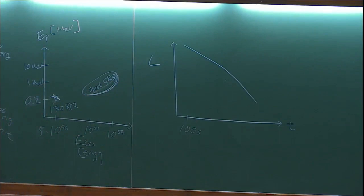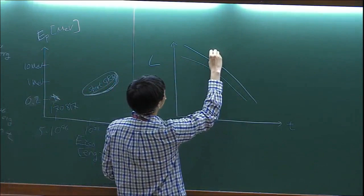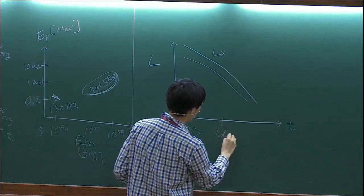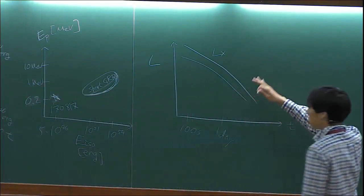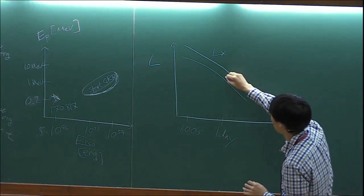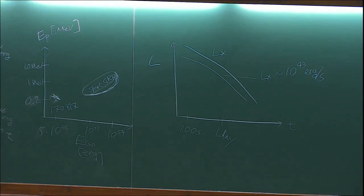Say 100 seconds after we see this pulse, the telescope tries to quickly observe the X-ray or optical afterglow. The X-ray goes something like this, and the optical something like this. This is long-lived - you can see it for one week. And typically at one day, that luminosity is about 10 to the 43 ergs per second. So this is very bright.